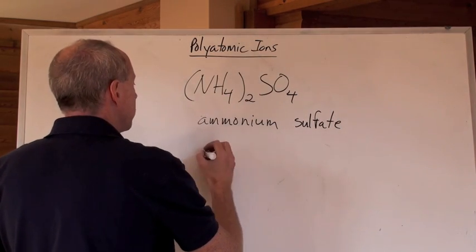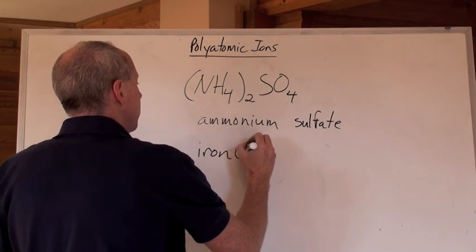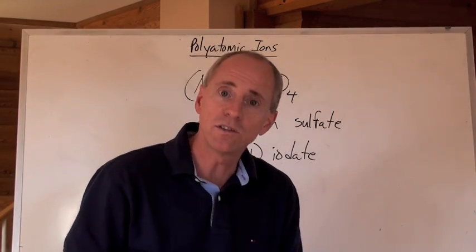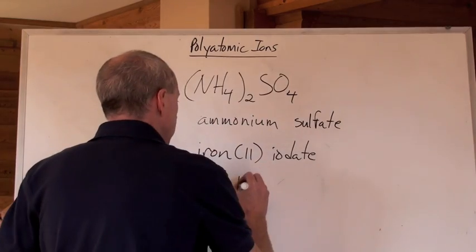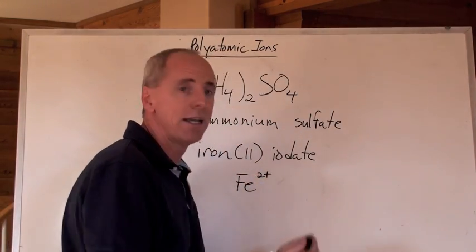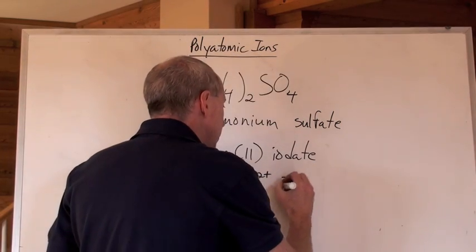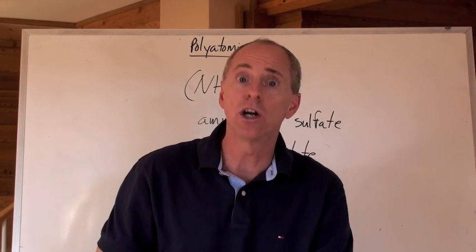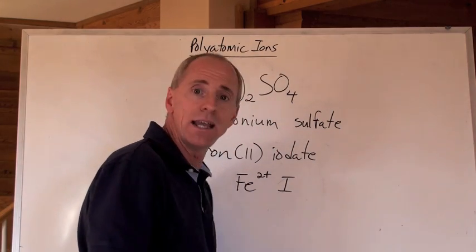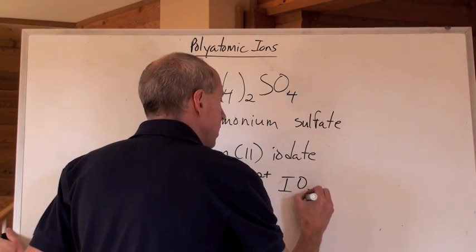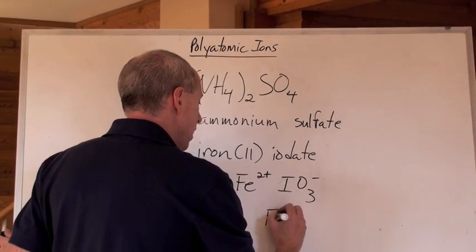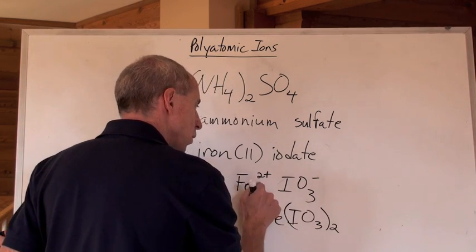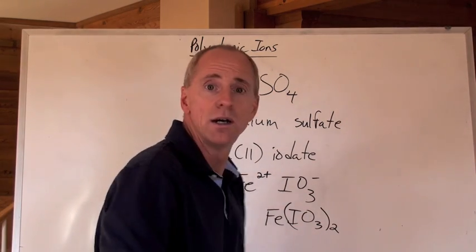How about another one where we would have something like, I would give you iron two iodate. First of all, you've got to make that into a formula. So what does it say, iron two? So you get iron with a two-positive charge. Iodate. Don't be putting I down, because I is iodide. Now, iodate, if it ends in ate or ite, it's on that polyatomic chart. Just look for it. And so, iodate is going to be IO3 with a negative one charge. That's what it says. You put those two together, and you get Fe, IO3, in brackets, two, because you need two iodates for every one of those right there. And that's iron two iodate.